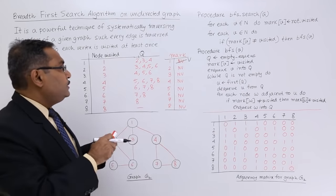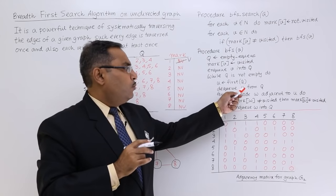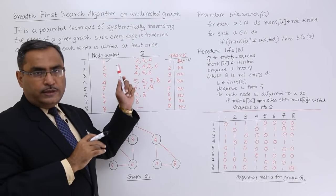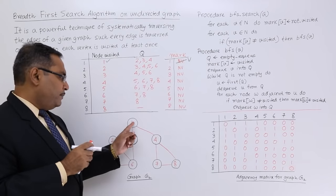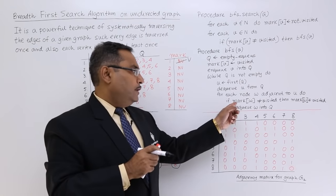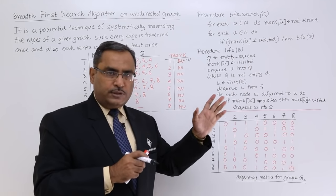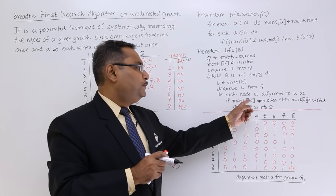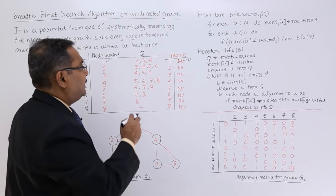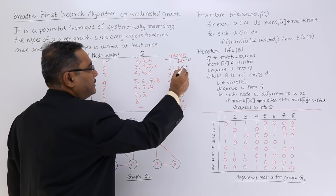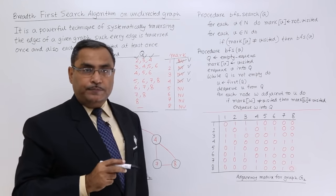U is equal to first of Q, so U becomes 1 and it is deleted from Q. For each node W adjacent to U: node 1 has adjacent nodes 2, 3, and 4. If mark of W is not equal to visited, then mark of W is set to visited and W is enqueued. So 2 is inserted and marked visited, 3 is inserted and marked visited, 4 is inserted and marked visited.